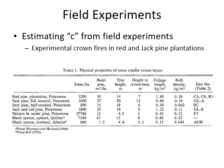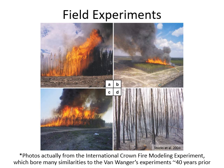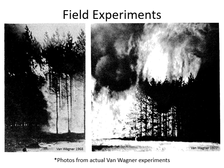They broke these stands into roughly one-hectare blocks surrounded by dozer lines to contain the fire and ran a bunch of independent tests, estimating at what intensity the surface fire would transition into the crowns. These photos are from a more recent international crown fire modeling experiment but look similar to Van Wagner's work. In the top left, you can see a fully developed crown fire — well past transition and into active crown fire spread — and you can see how large blocks were cut out of the forest for these experiments.